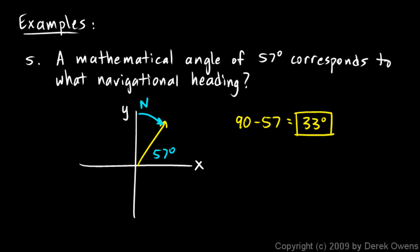A mathematical angle of 57 degrees corresponds to a heading of 33 degrees. That's one example. We'll do three more so that we have one example in each quadrant.